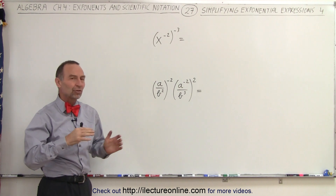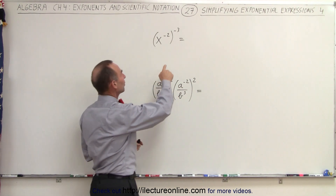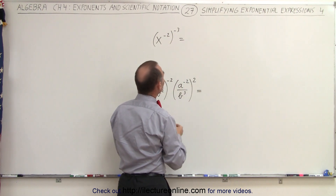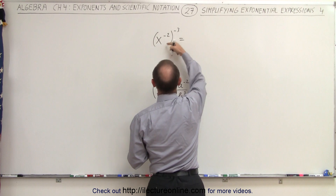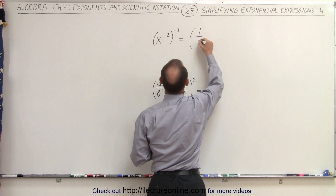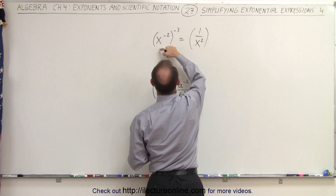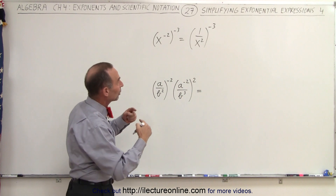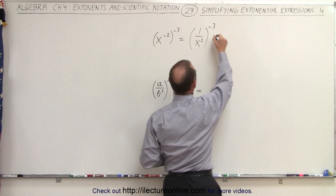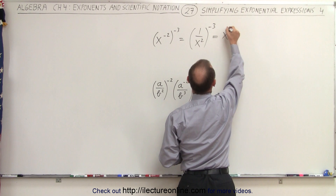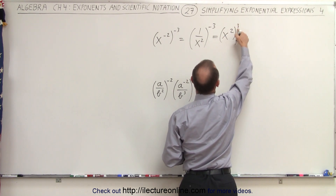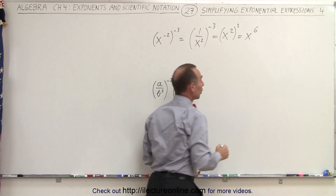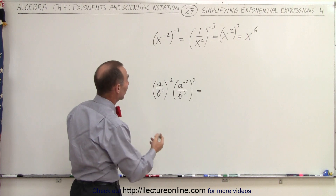Sometimes it's easier to just go ahead and use the rule, but in this case we have a negative exponent raised to a negative exponent. Rather than doing this directly, we could first change it into a positive exponent by writing this as 1 over x squared, moved to the denominator to make it positive, raised to the negative 3 power. Then we turn it into a positive exponent by flipping it over, so this equals x squared raised to the third power. Then we use the multiplication rule: x to the 2 times 3, or 6th power.